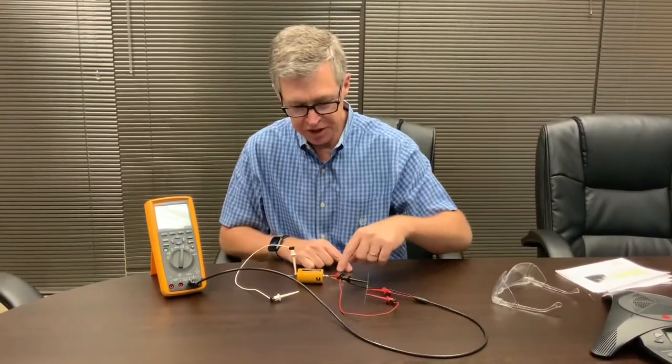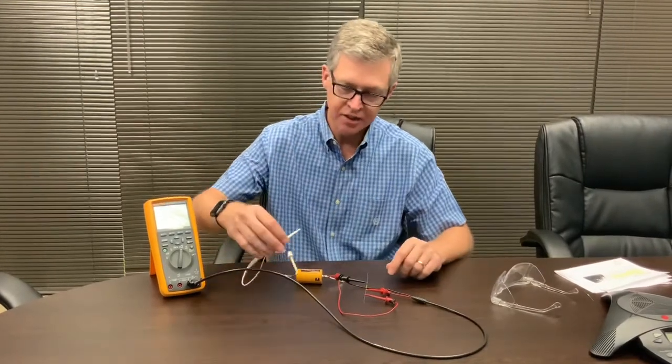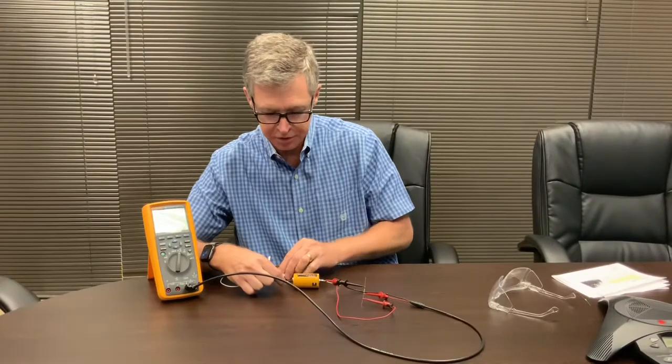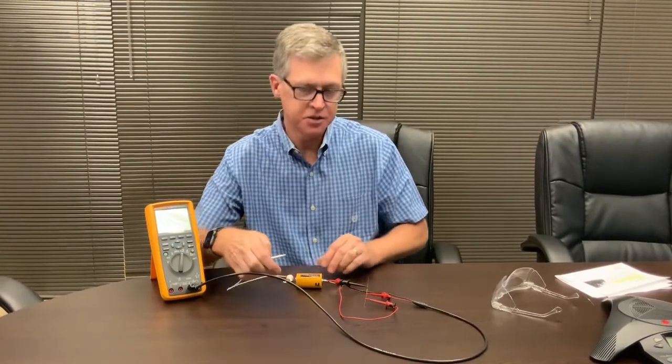So, what I have is, I have the fuse connected to the positive, and I have the negative lead coming off the battery, which I'm going to touch to the fuse, which will cause a direct short circuit.